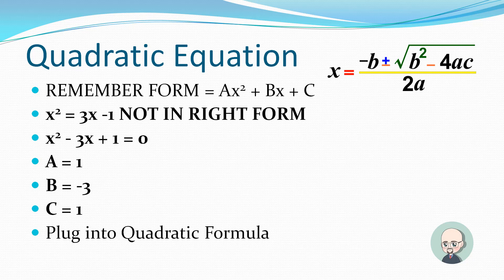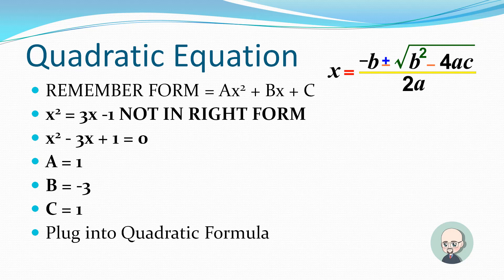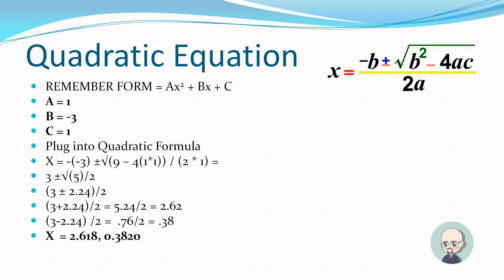The equation x squared equals 3x minus 1 is not in the correct form, so we rearrange it to x squared minus 3x plus 1 equals 0. Our a is 1 (coefficient of x squared), b is negative 3 (coefficient of x), and c is 1. Now we plug into the quadratic formula: x equals negative b plus or minus the square root of b squared minus 4ac, divided by 2a.